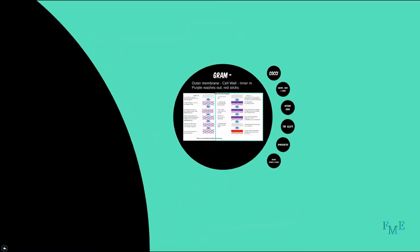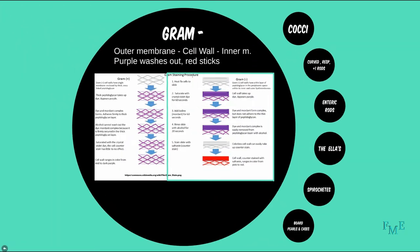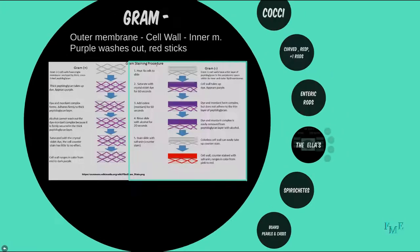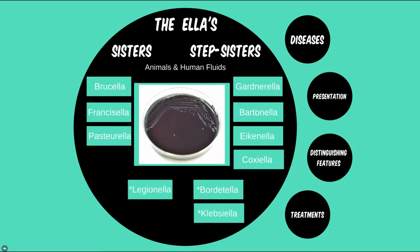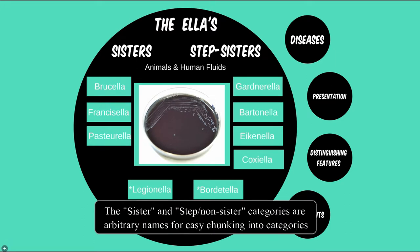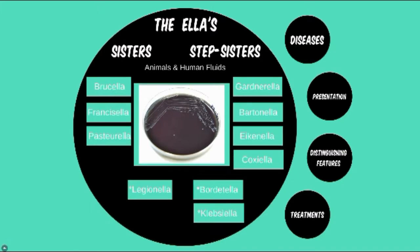As we begin Module 6, let's point out a few commonalities between these microbes. This section has been separated into half to help chunk the similar sounding names of these bacteria. The three at the bottom in asterisks we have already covered in a previous module, but if you draw a line down the middle of this image, you will see that they are still divided into two groups. Those we refer to as sisters in this module are all culturable on buffered charcoal yeast extract medium, while the non-sisters are not.